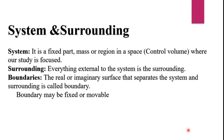The next is system and surrounding. The system is a part, or mass, or a region in space where our study is focused. Surrounding is everything external to the system. Boundary is the real or imaginary surface that separates the system and surrounding, and is called the boundary. The boundary may be fixed or it may be a movable boundary.